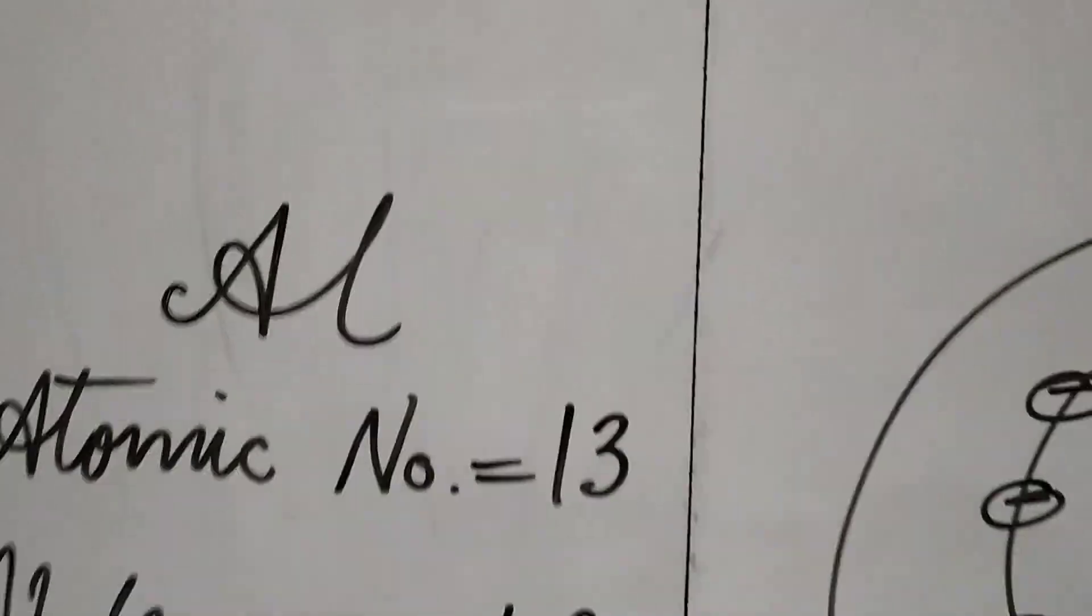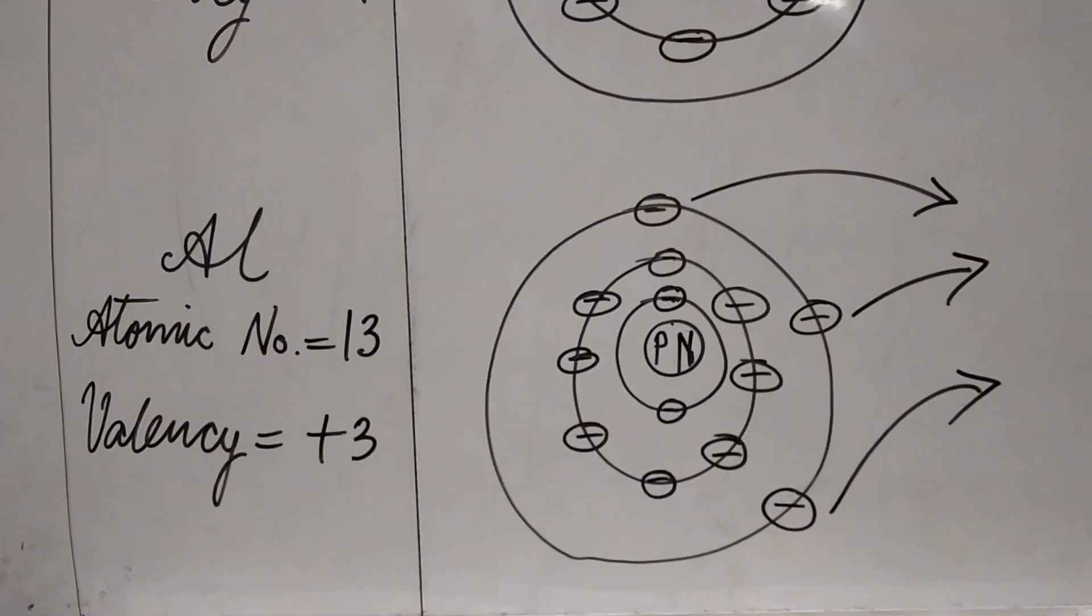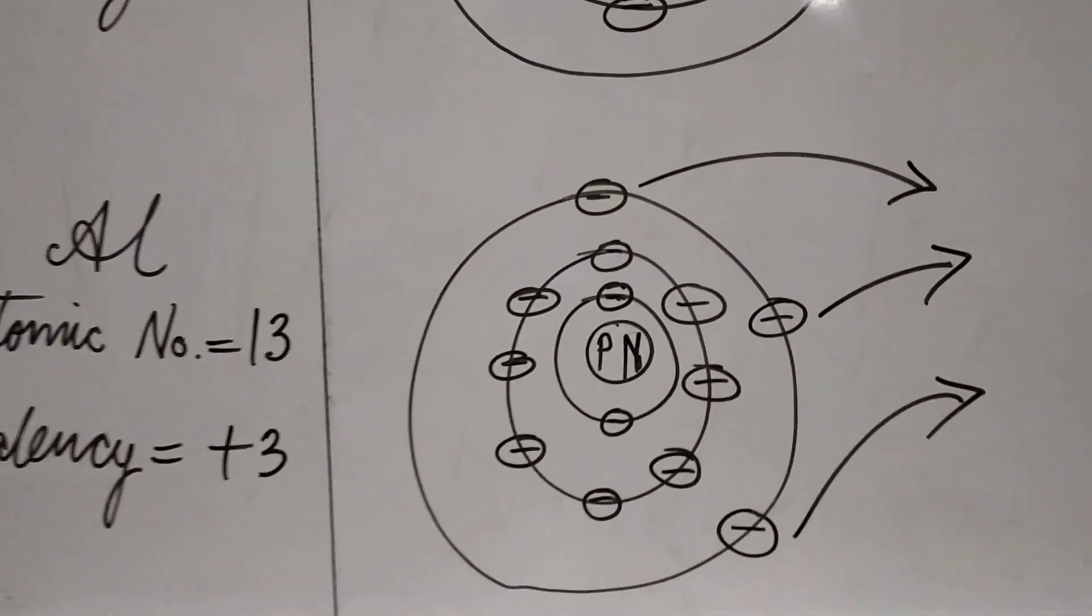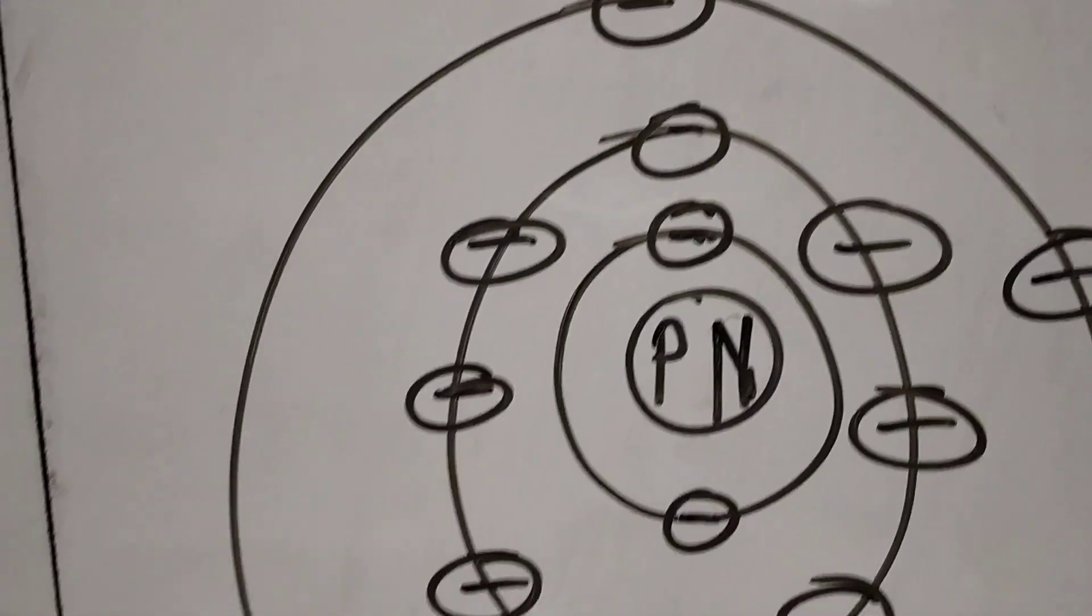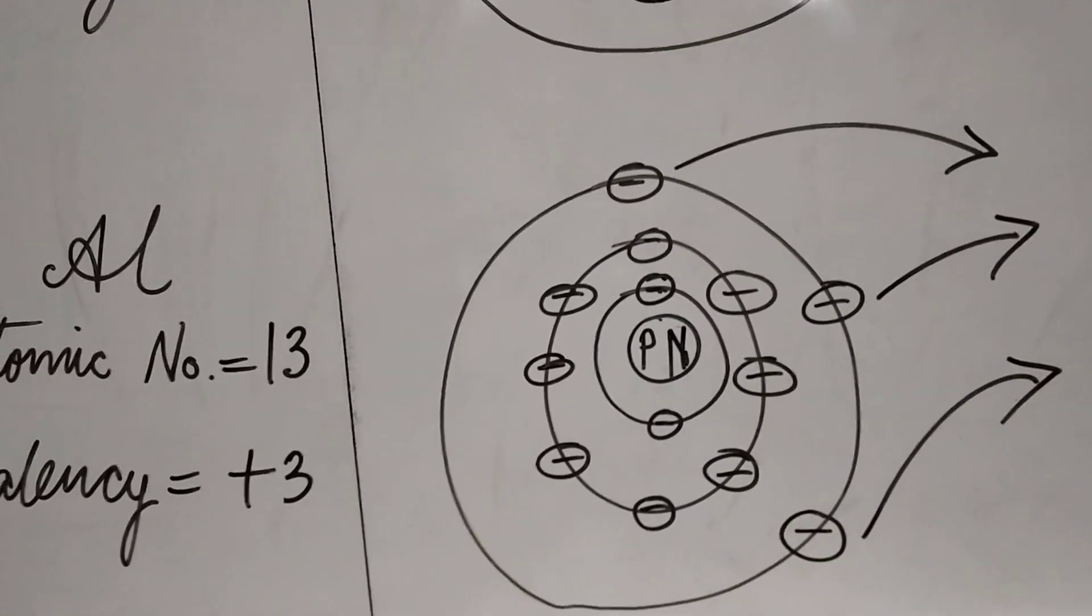Similarly, let us take a look at aluminium. The atomic number is 13. Now here, the first shell has two electrons, second has eight and the third has three. Eight plus two plus three.